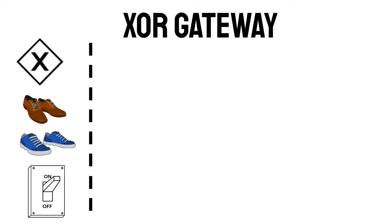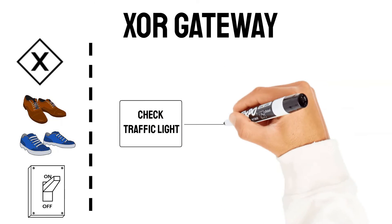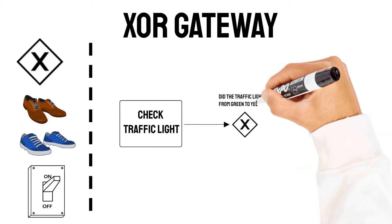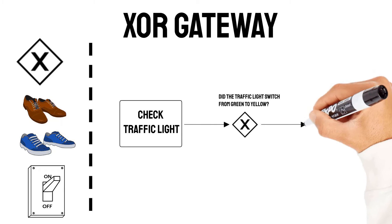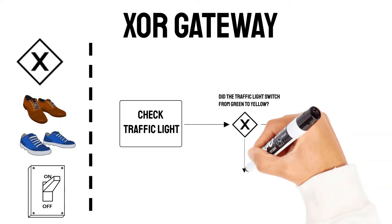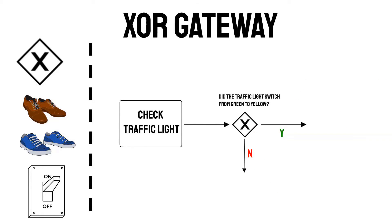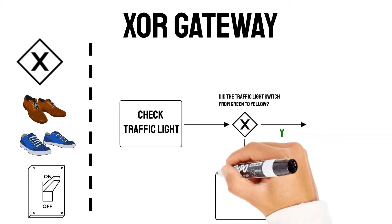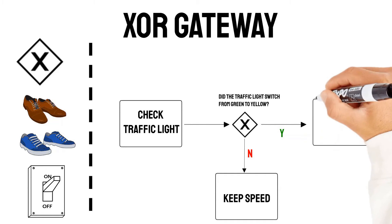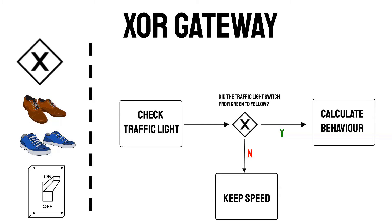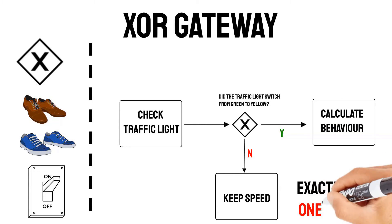Let me explain this one. Imagine a self-driving car. While driving, the car is constantly checking traffic lights. After checking the traffic light, the question is: did the traffic light switch from green to yellow? Based on the observation of the car, there are only two options — either yes or no. When the answer is no, the car keeps its speed because the light won't turn to red. In case the traffic light switched from green to yellow, the car calculates its behavior: whether it should keep the speed, increase it, or start to slow down. Only one and exactly one path is valid here — never both.